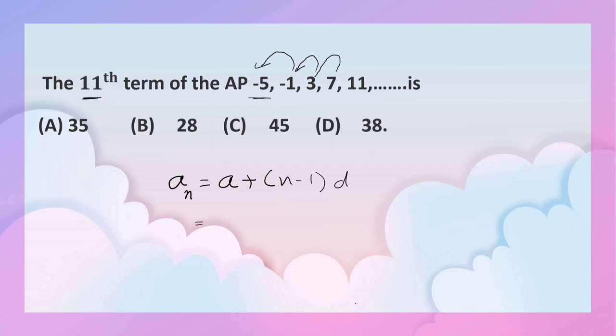Let us now substitute: minus 5, n is 11 minus 1 that is 10, d is 4. That is equal to minus 5 plus 40, that is 35.